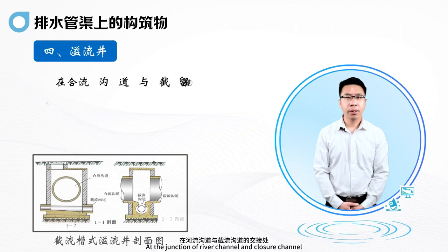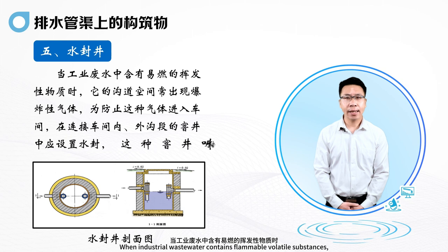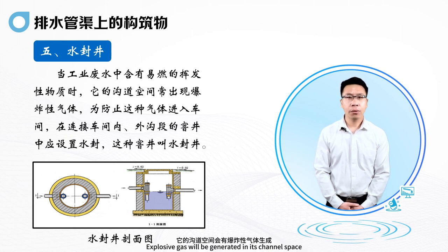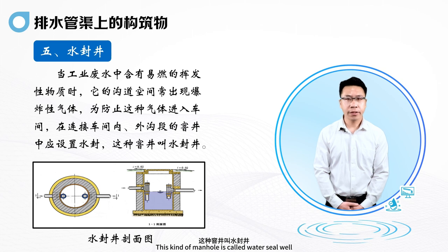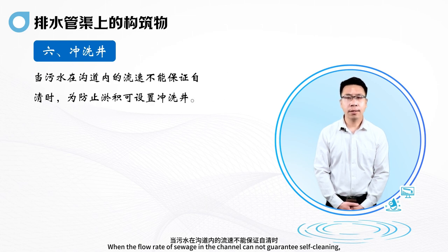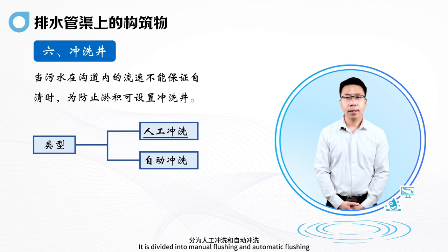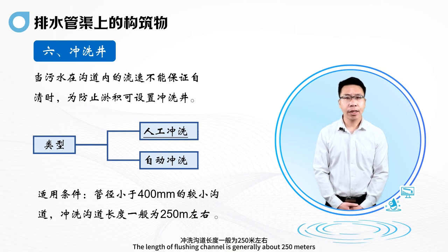Fourth, overflow well. At the junction of river channel and closure channel, overflow wells are set up to complete the functions of interception and overflow. Fifth, water sealed well. When industrial wastewater contains flammable volatile substances, explosive gas will be generated in its channel space. To prevent this gas from entering the workshop, a water seal shall be set in the inspection well connecting the inner and outer ditch sections of the workshop — this is called a water seal well. Sixth, flushing wells. When the flow rate of sewage in the channel cannot guarantee self-cleaning, flushing wells can be set up to prevent siltation. There are two types: manual flushing and automatic flushing. Applicable conditions: generally smaller channels with pipe diameter less than 400 millimeters; the length of flushing channel is generally about 250 meters.